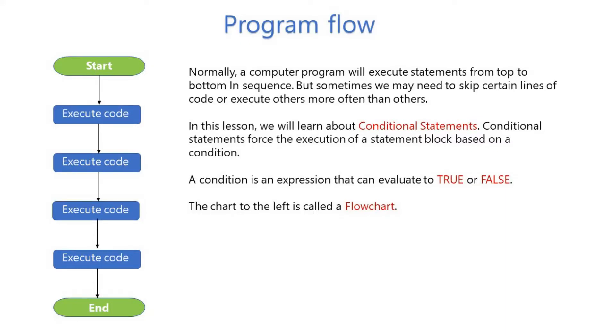Program flow. Normally, a computer program will execute statements from top to bottom in sequence. But sometimes we may need to skip certain lines of code or execute others more often than others.